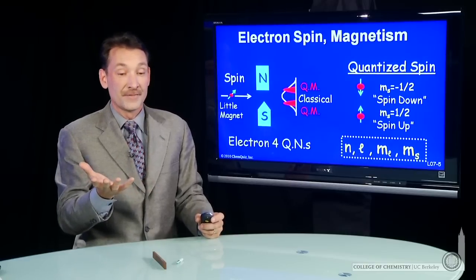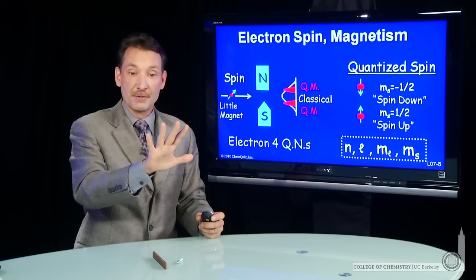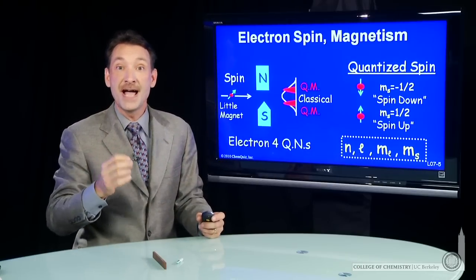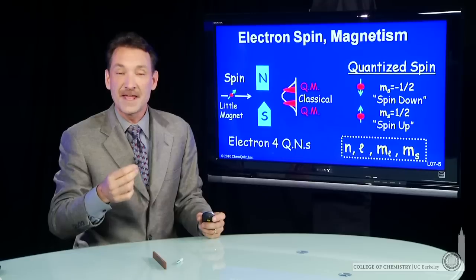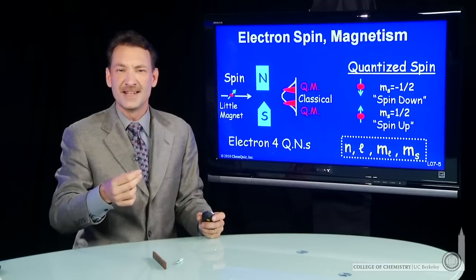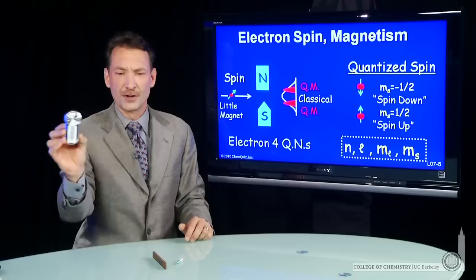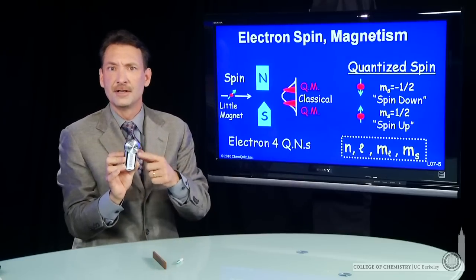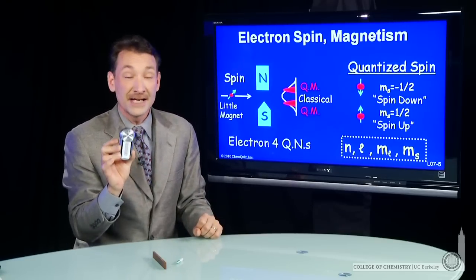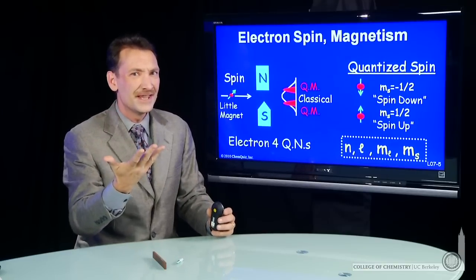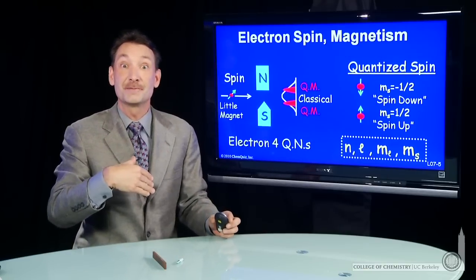For instance, electrons have a property where if they were to go around a closed loop, they wouldn't come back to the same state that they were the first time. And that's kind of odd, right? You usually expect something. If you say, I'll take this, and I'll go around in a closed loop, it should look the way it looked when it started. Electrons don't behave that way. They have a twist in their space relative to our space.